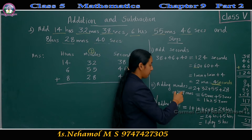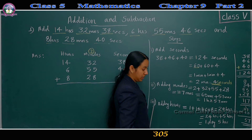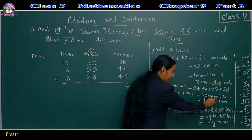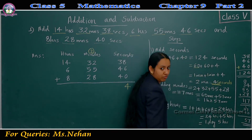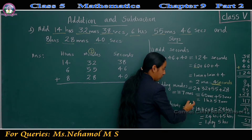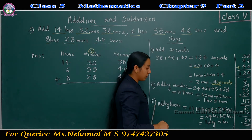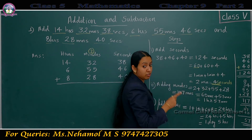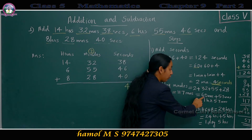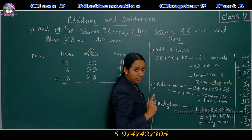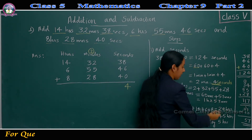We can split 117 as 60 minutes plus 57 minutes. 117 minus 60 is 57. We know 60 minutes means 1 hour. So instead of 60 minutes, we write 1 hour, then 57 minutes.